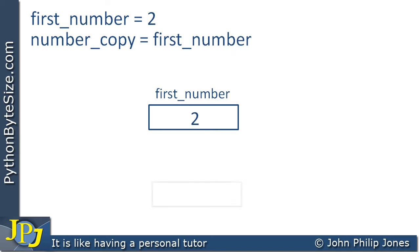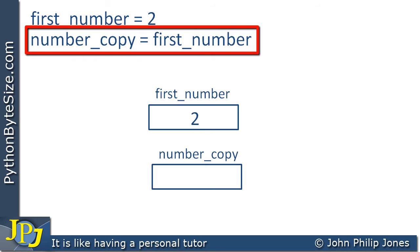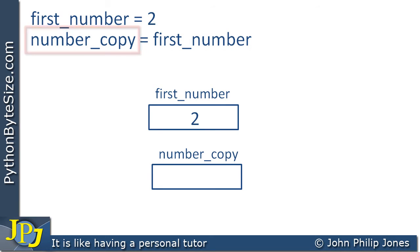The next program statement here says number copy is assigned first number. Straight away you can see here that a variable has been created with this identifier. And if we look at the program statement, we can see there's an assignment statement. And what's going to happen is the contents of this variable here are going to be assigned to the contents of this one. So we can animate that as shown here with that 2 simply moving to that position.